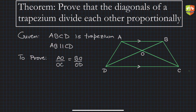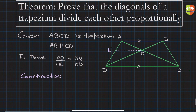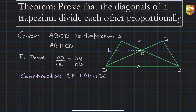Construction: I am going to draw OE parallel to AB. The moment OE is parallel to AB, it automatically becomes parallel to DC as well. Now in the triangle we can write a few ratios.